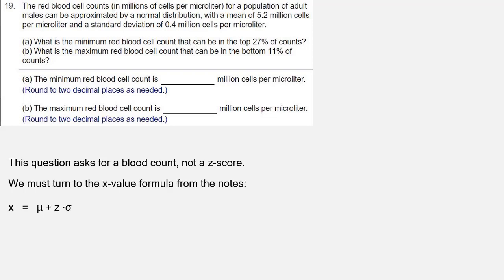The x-value formula is x equals μ plus z times σ, which is 5.2 plus negative 1.23 times 0.4, which is 5.2 plus negative 0.492, which when we add, we get 4.708. Rounded to two decimal places, the maximum blood cell count to be in the bottom 11% is given by 4.71 million red blood cells.